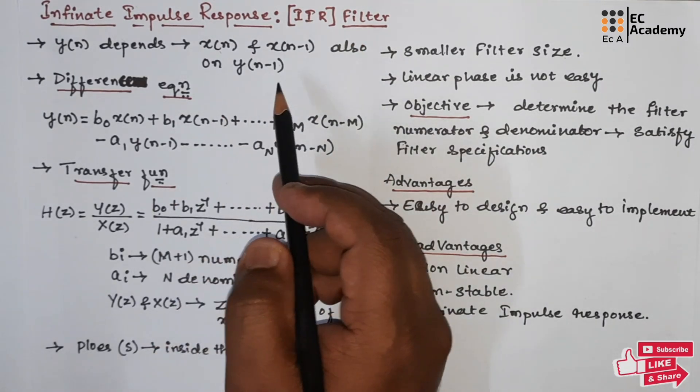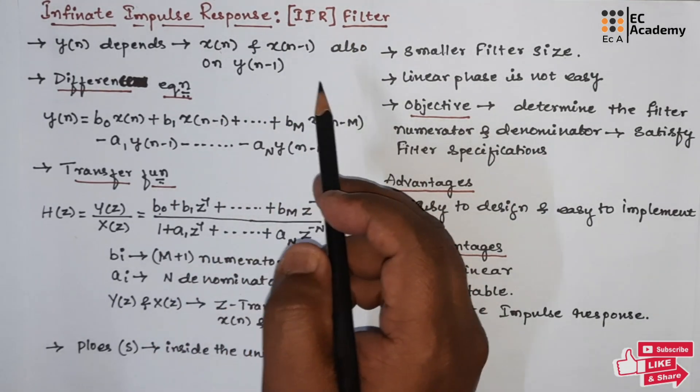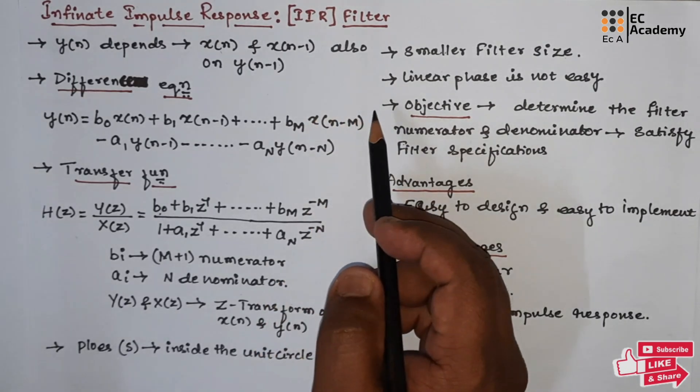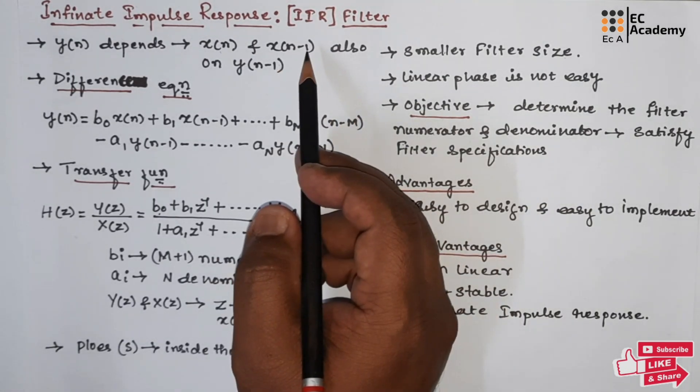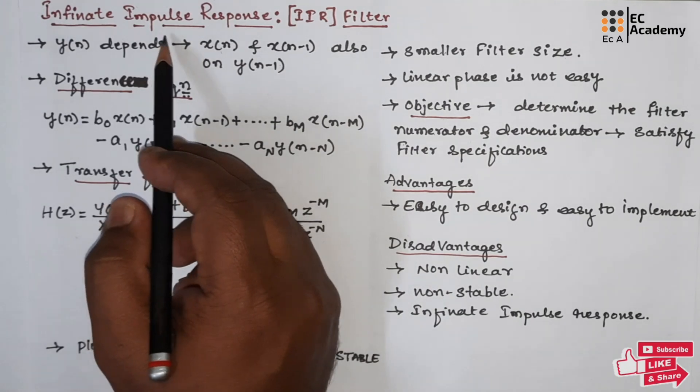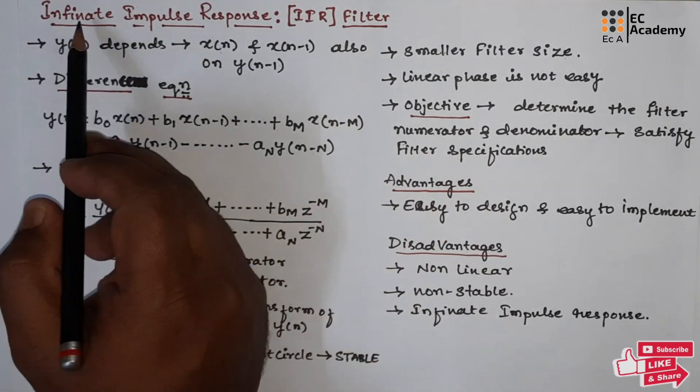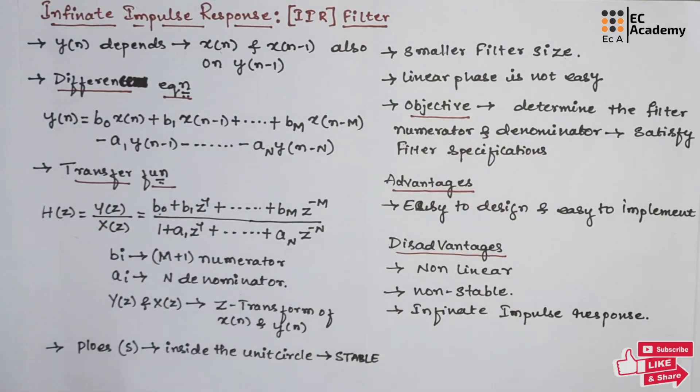In the previous lecture we understood about finite impulse response, which is FIR filter, where the impulse response was finite. In this type of filter the number of impulses will be infinite. That is why it is known as infinite impulse response filters.